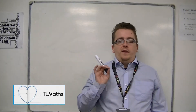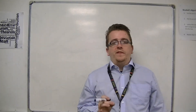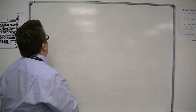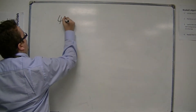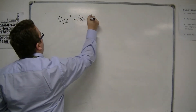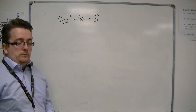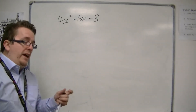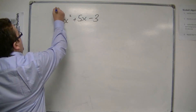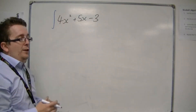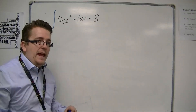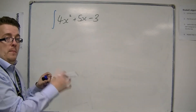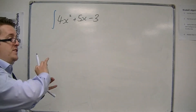There's a very specific notation that comes with integration. Let's say we needed to integrate something like 4x squared plus 5x minus 3. If you're going to integrate this, we use a notation that looks like this. We have an integral symbol that looks like an elongated s, and it actually represents an infinite sum — that's why s is used for sum.